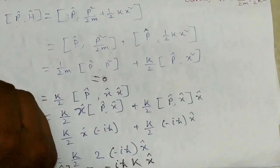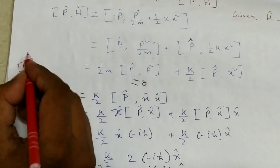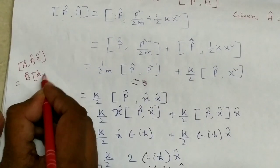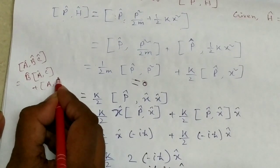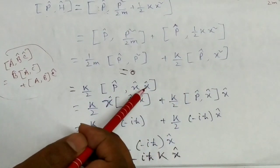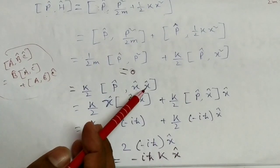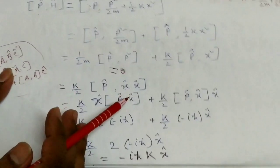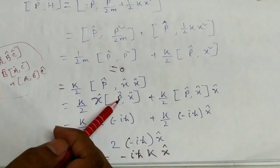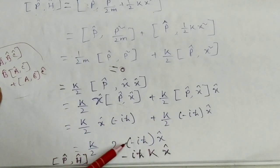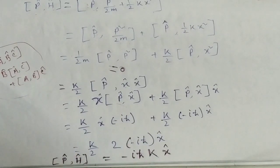We use the rule [A, BC] = B*[A,C] + [A,B]*C. Applying this to [p, x²] = [p, x*x], we get x*[p, x] + [p, x]*x. Since [p, x] = minus i*h_bar, we get x*(minus i*h_bar) + (minus i*h_bar)*x = minus 2*i*h_bar*x. Therefore (k/2)*[p, x²] = (k/2)*(minus 2*i*h_bar*x) = minus i*h_bar*k*x. That is the answer.